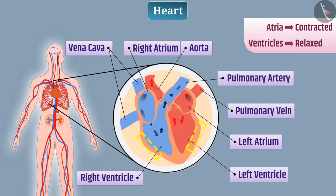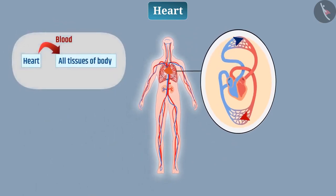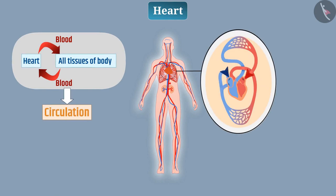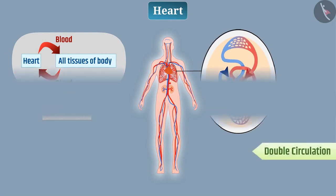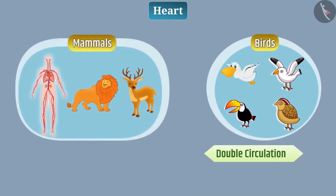The muscular wall of the ventricle is thicker than the wall of the atrium. The continuous movement of blood from the heart to all tissues and back to the heart is called circulation. Since blood enters the heart twice in each cycle, it is called double circulation. Birds and mammals have double circulation.